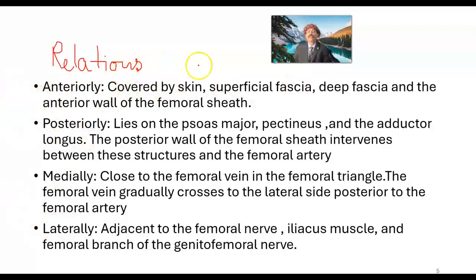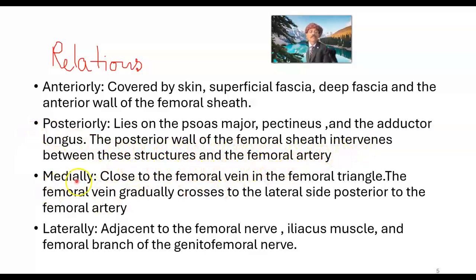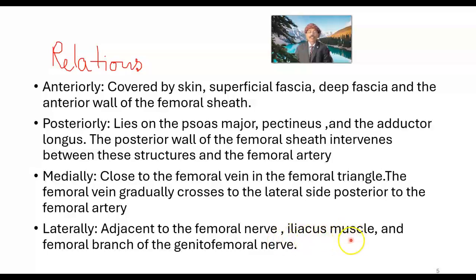Anteriorly, the femoral artery is covered by the skin, superficial fascia, deep fascia, and the anterior wall of the femoral sheath. Posteriorly, it lies on the psoas major muscle, pectineus, and adductor longus — with the posterior wall of the femoral sheath intervening. Medially, it is close to the femoral vein in the femoral triangle, though the femoral vein gradually crosses to the lateral side posteriorly in the lower part. Laterally, the femoral nerve and the iliacus muscle are adjacent.